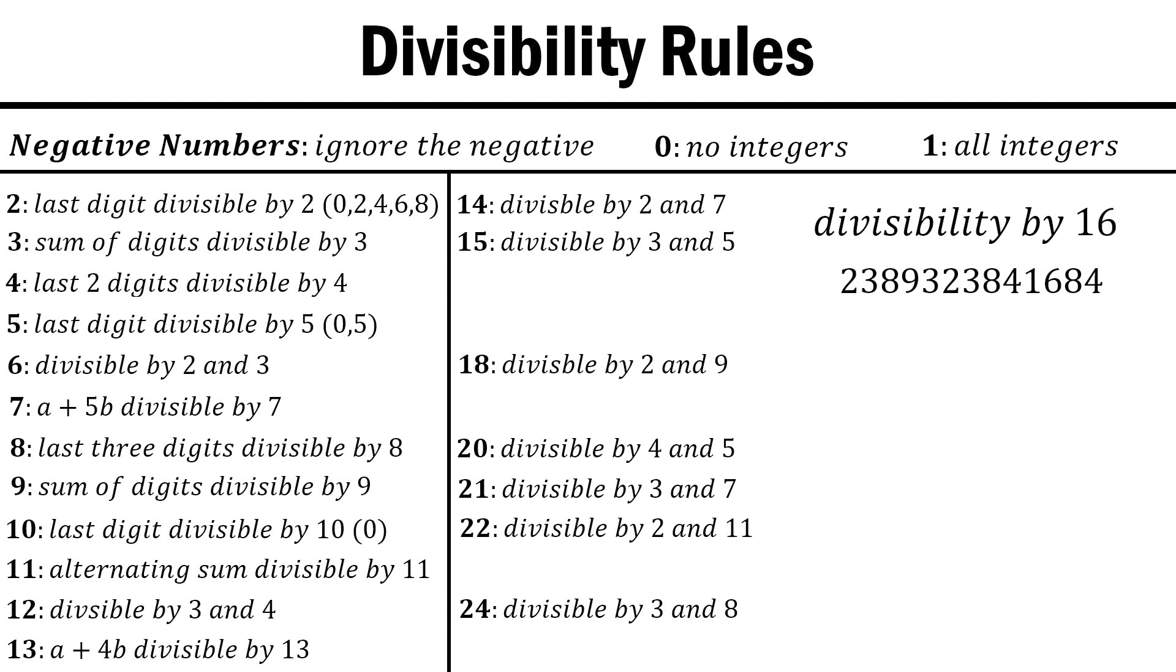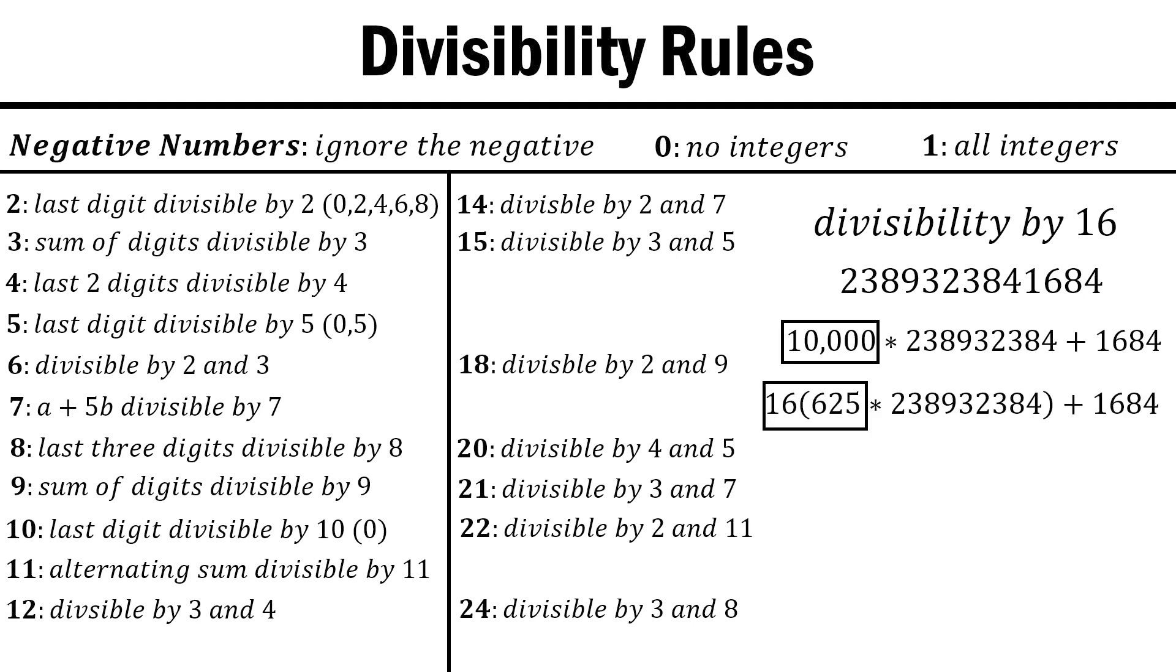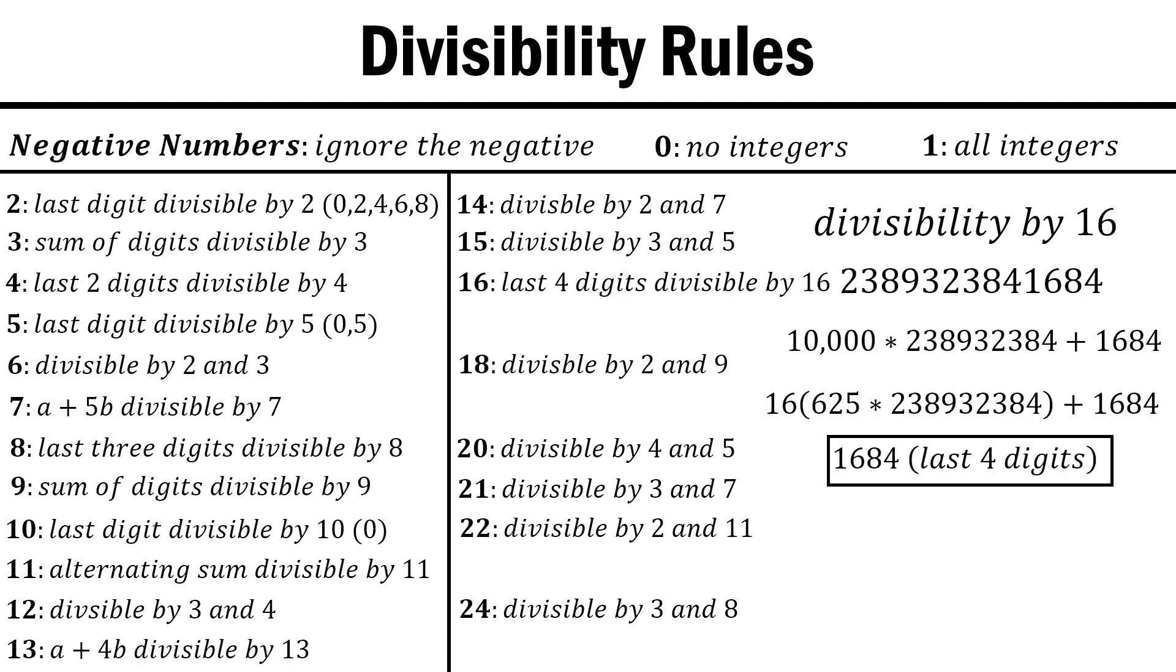Next up we have 16, which, as another power of 2, requires an even bigger power of 10 to check divisibility. Taking b as the last 4 digits this time, we represent our number as 10,000 times a long string of digits plus the last 4 digits, 1684. 10,000 is divisible by 16, so we only have to check 1684.